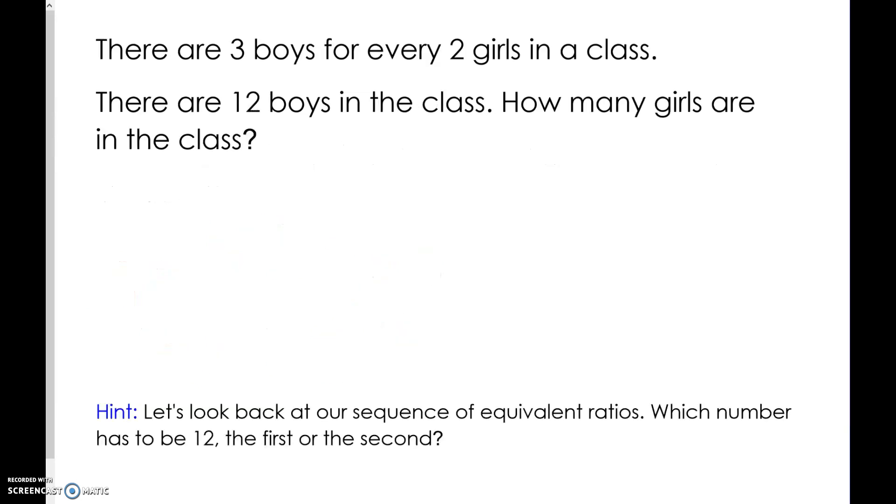Try this example on your whiteboard and check your answer. There are 3 boys for every 2 girls. If there are 12 boys, how many girls are there? To go from 3 to 12 we multiply by 4. 2 times 4 is 8. Therefore our new ratio is 12 to 8.